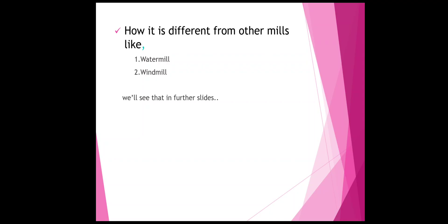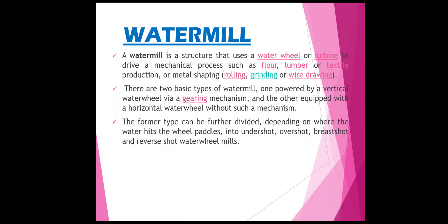How is it different from a water mill or windmill? By definition, a water mill is a structure that uses a water wheel or turbine to drive a mechanical process, such as lumber or textile production, metal shaping, rolling, grinding, or wire drawing. There are two basic types of water mill: one powered by a vertical water wheel via a gearing mechanism, and another equipped with a horizontal water wheel without such a mechanism. The former type can be further divided depending on whether the water wheel is undershot, overshot, breastshot, or reverse-shot.